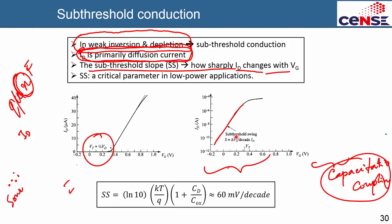Hypothetically, if the sub-threshold slope were 10 mV/decade, every order of magnitude of current increase would cost only 10 mV — by the time you go from 10 to 50 mV you would drop 4 orders of magnitude. Unfortunately, there is a fundamental limit in a MOSFET because this is a Boltzmann-type thermionic transport. You cannot exceed this limit of 60 mV/decade — that is the best you can achieve, regardless of geometry or scaling.